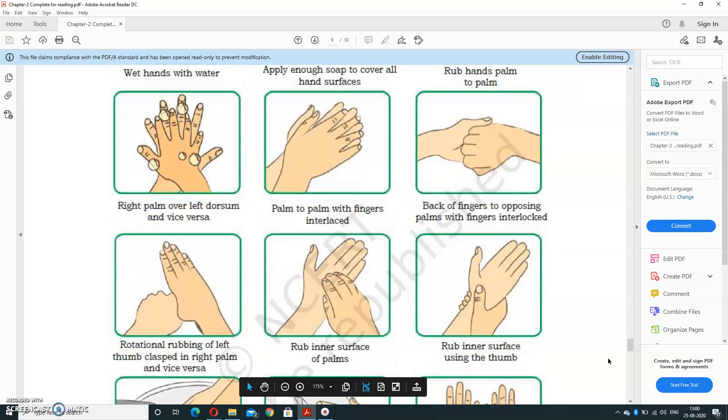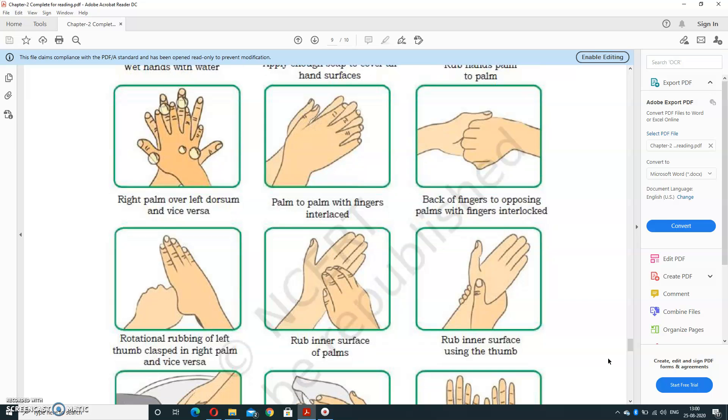Back of fingers to opposing palm with fingers interlocked. Next step: rotational rubbing of left thumb clasped in right palm and vice versa. Rub inner surface of palm also. Afterward, rub inner surface using thumb.